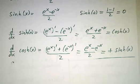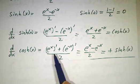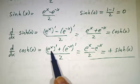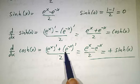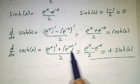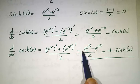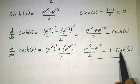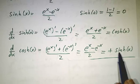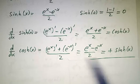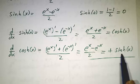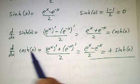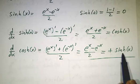The derivative of cosh: the e^x comes along for the ride, the e^(-x) switches sign, so the derivative of cosh is sinh. So instead of the derivative of cos being minus sin, the derivative of cosh is sinh.